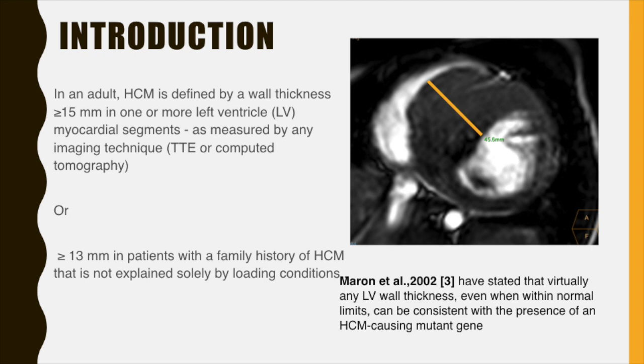In children, the diagnosis of HCM requires an LV wall thickness of more than 2 standard deviations greater than the predicted mean, i.e. a Z-score of more than 2. It is important to note, however, that virtually any LV wall thickness, even when within normal limits, can be consistent with the presence of an HCM-causing mutant gene. Here in this short axis CMR image, the myocardial hypertrophy is clearly visible and the wall thickness measured was 45 mm.